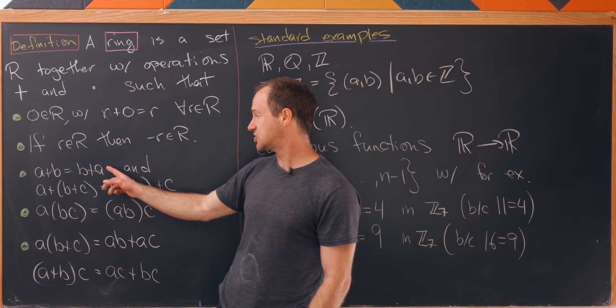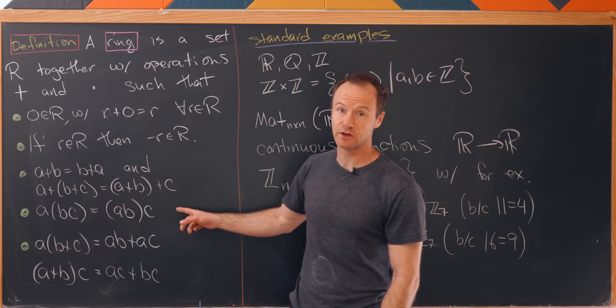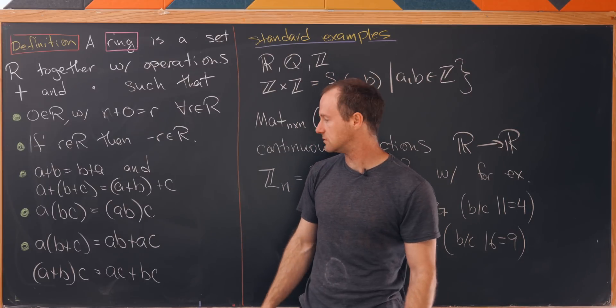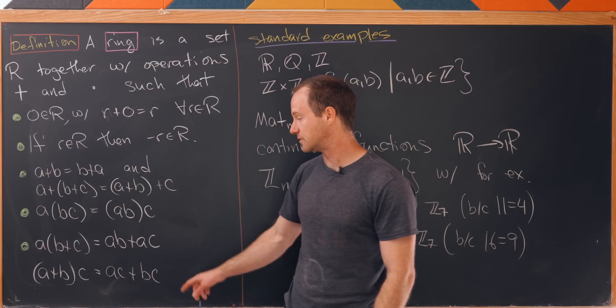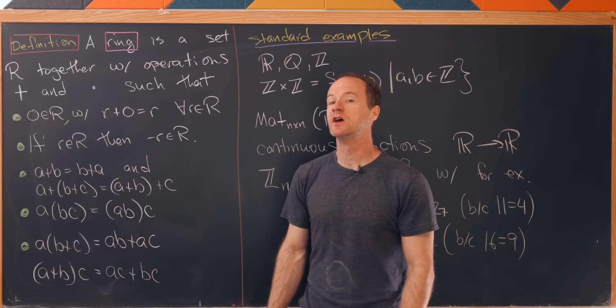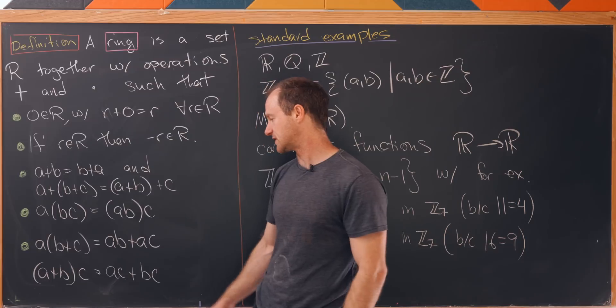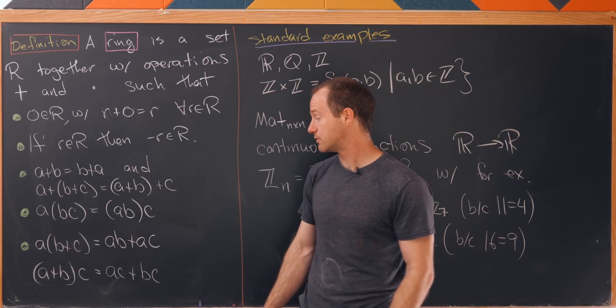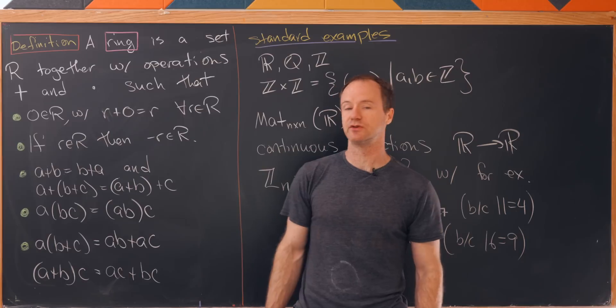Then addition is both commutative and associative. The multiplication is associative but not necessarily commutative. And finally you've got these distributive rules. You need two of them because you don't necessarily have commutativity of multiplication. So a multiplied onto b plus c is the same thing as ab plus ac, and similarly for a right distributive rule.